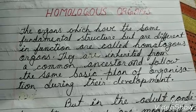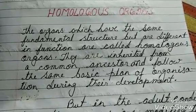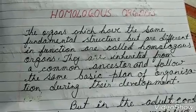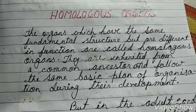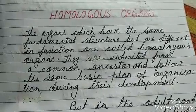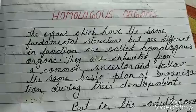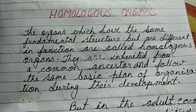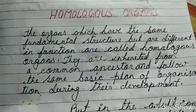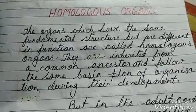Hello and welcome back. I have brought here a very important topic of biology — homologous organs and analogous organs. These are the anatomical evidence of evolution. First of all, I would like to tell you what is a homologous organ.